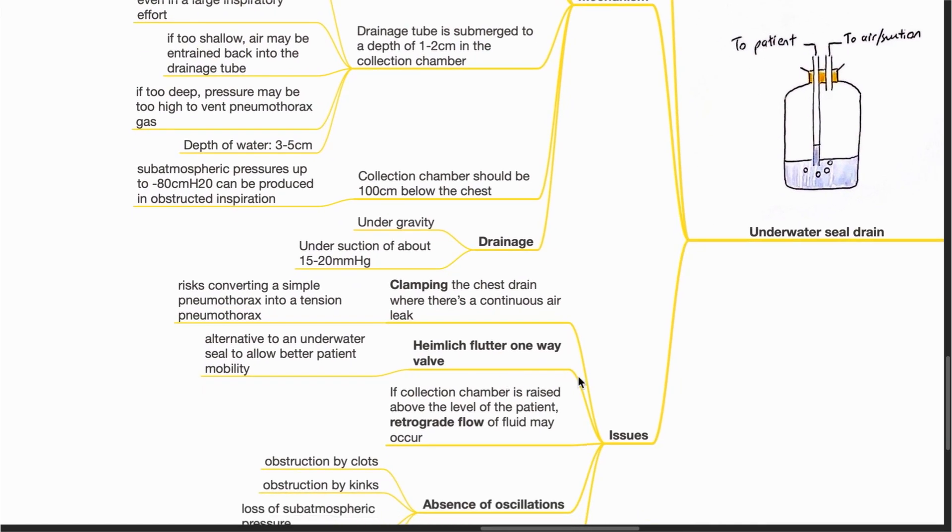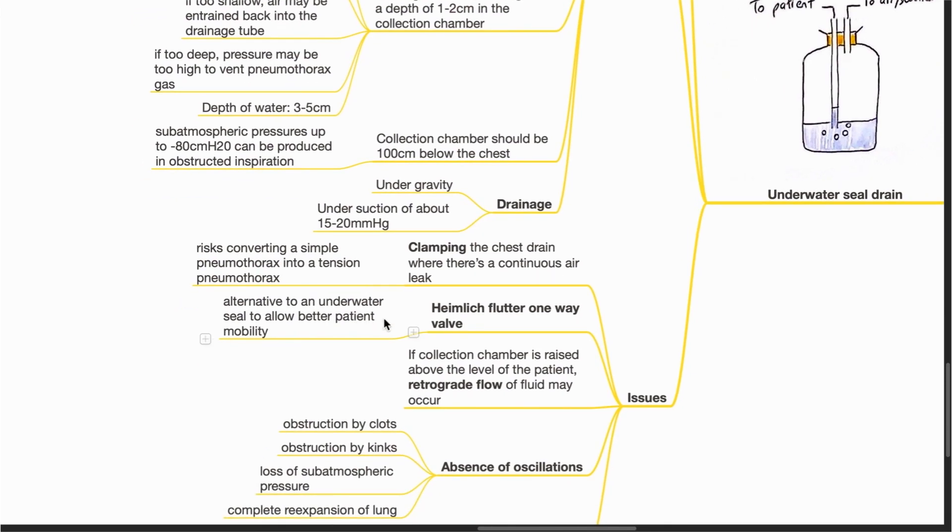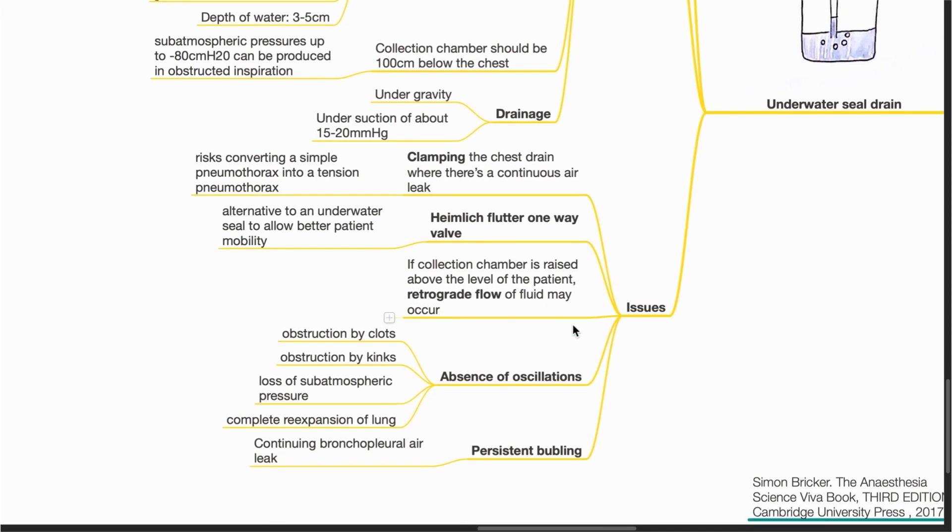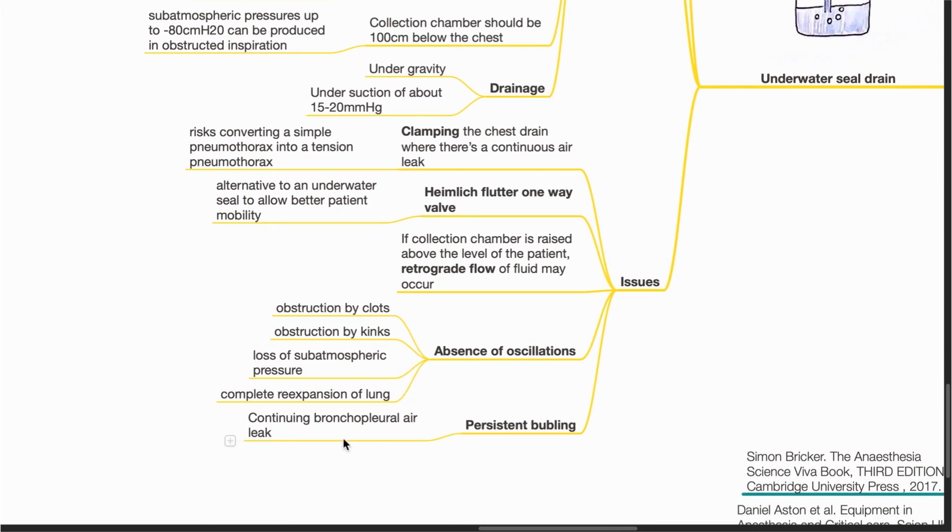Issues include when clamping the chest drain where there is a continuous air leak, this risks converting a simple pneumothorax to a tension pneumothorax. To allow better patient mobility, we can alternatively use a Heimlich flutter one-way valve. If the collection chamber is raised above the level of the patient, retrograde flow of fluid may occur. Persistent bubbling could signify bronchopleural air leak.